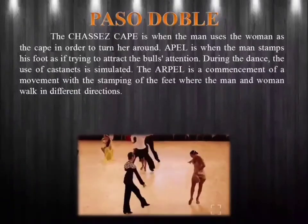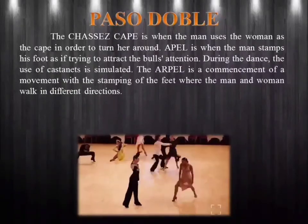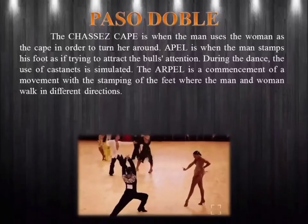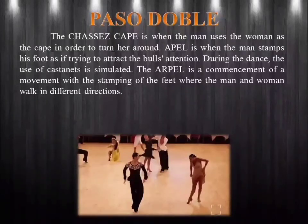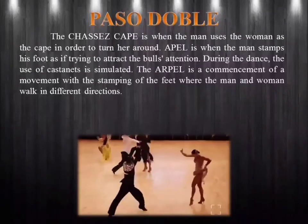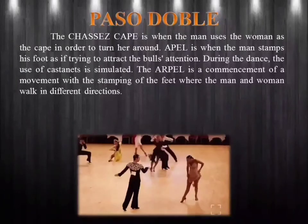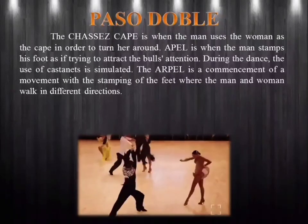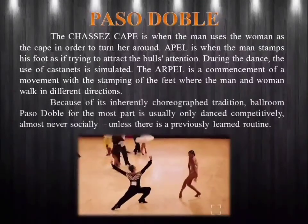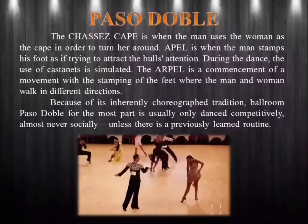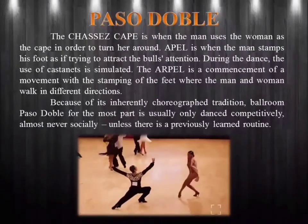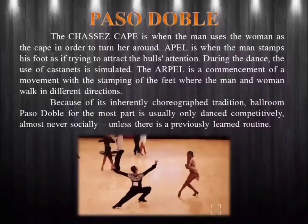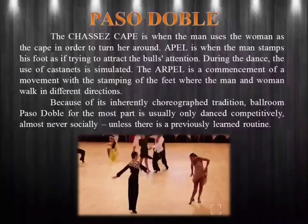The chassé cape is when the man uses the woman as the cape in order to turn her around. Apel is when the man stamps his foot as if trying to attract the bull's attention. During the dance, the use of castanets is simulated. The arpelle is a commencement of a movement with the stamping of the feet where the man and woman walk in different directions. Because of its inherently choreographed tradition, ballroom Paso Doble is usually only danced competitively, almost never socially, unless there is a previously learned routine.